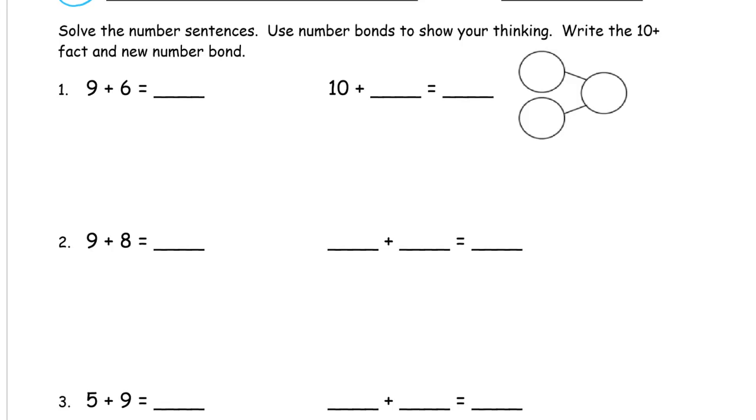So you're looking at this 9 plus 6. And you're thinking, oh, that's really a 10, 5. It's really a 10 plus 5. Right? Because this 9 and that 1 make a 10. So we're thinking of this 6 as 1 and a 5. That's 1 less. So, 15. And the new number bond is 15, which is a 10 and a 5.